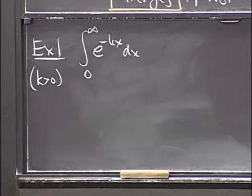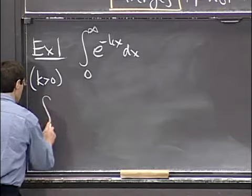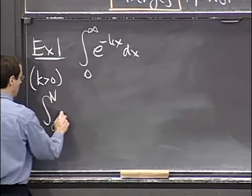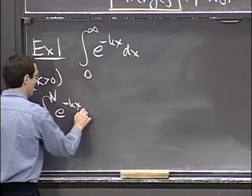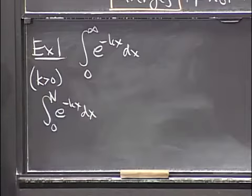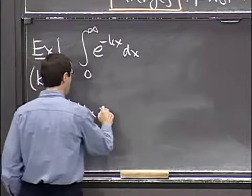In order to handle this, the thing that I need to do is to check the integral from 0 up to n, e to the minus kx dx. And since this is an easy integral to evaluate, we're going to do it.